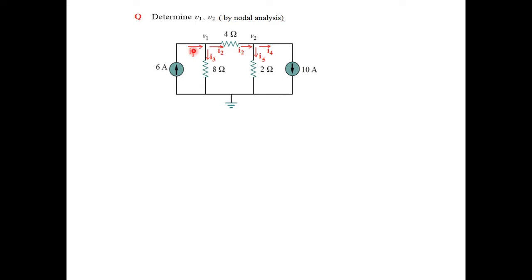As we learned earlier, we take currents. I have taken one current I1 entering and two currents leaving: I2 and I3. Similarly, at the other node, the same current I2 entering and I4 and I5 leaving. The first step is to write the KCL at node number one: I1 entering and I2, I3 leaving, so I1 equals I2 plus I3. Since I1 is already given as 6 amperes, no need to convert it to voltage terms.